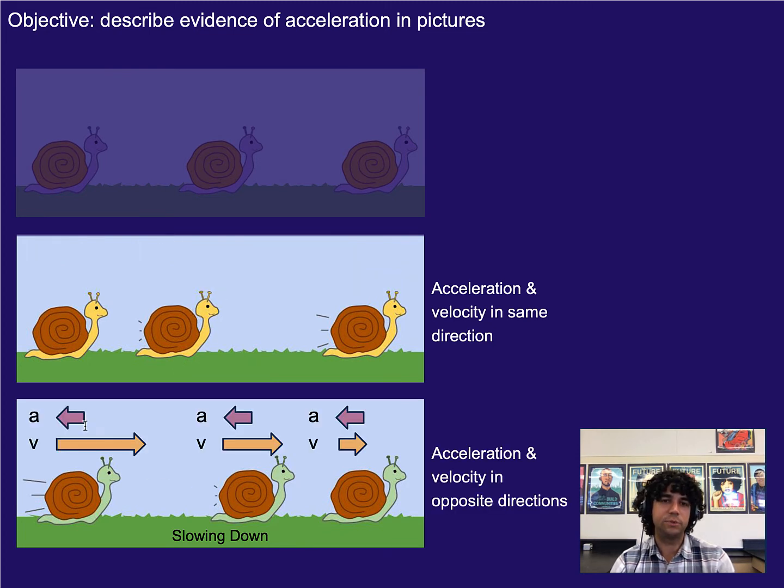On the flip side, anytime we see something slowing down, we know that the velocity and the acceleration are in opposite directions. Here we could see subtracting kind of that size of arrow from this vector to give us this one and subtracting this from here to give us this one. Anytime something is slowing down, we know that the acceleration is in the opposite direction of the velocity. What if it's not in the same direction or the opposite? What if it's at an angle? Well, in that case, we would have some sort of change in direction happening.